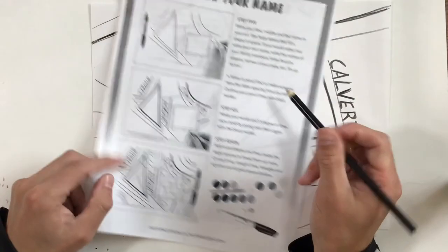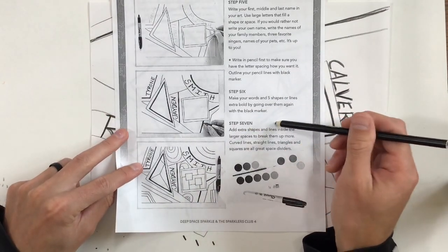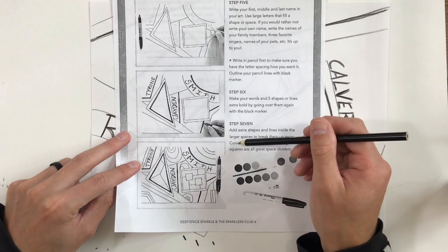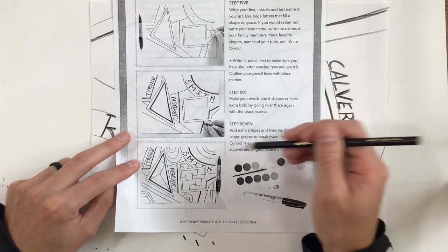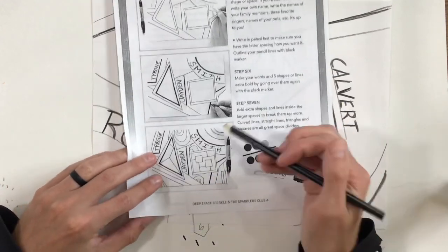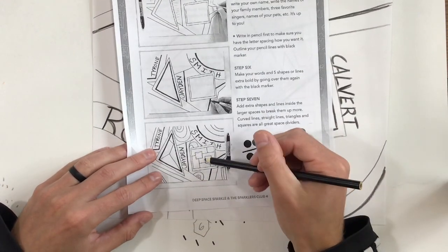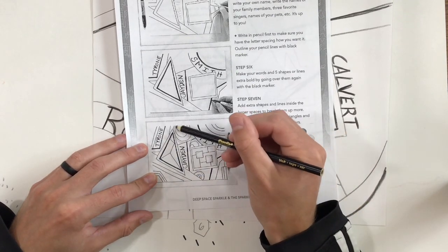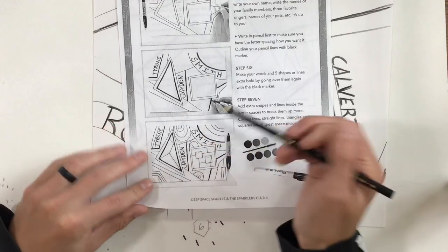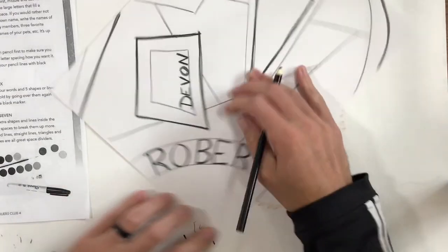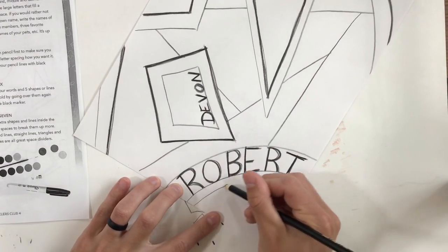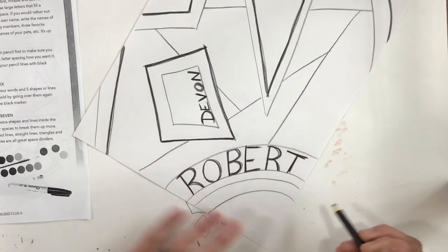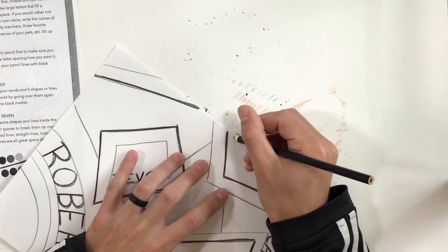The last thing that you're going to do today is it says add extra shapes and lines inside the large spaces to break them up more. So use curved lines, use straight lines, use triangles and squares. They're all great space dividers. You can see how this person did some of these squares. They did some of these half circle shapes. Here's some more of those half circles, kind of repeated some of those lines that they did. So we really want to go in and add some more details to it.